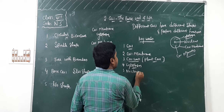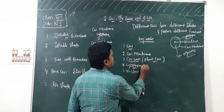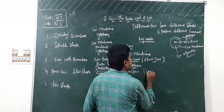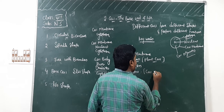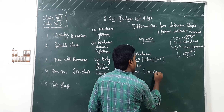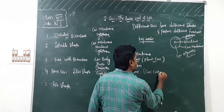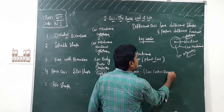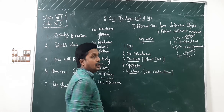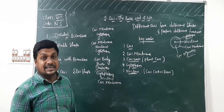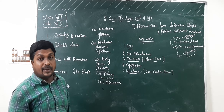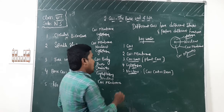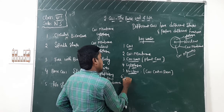Fifth keyword is nucleus. The center portion of the cell has a nucleus. The nucleus is called the cell control room. All activities in the cell are controlled by the nucleus. It was discovered by Robert Brown.